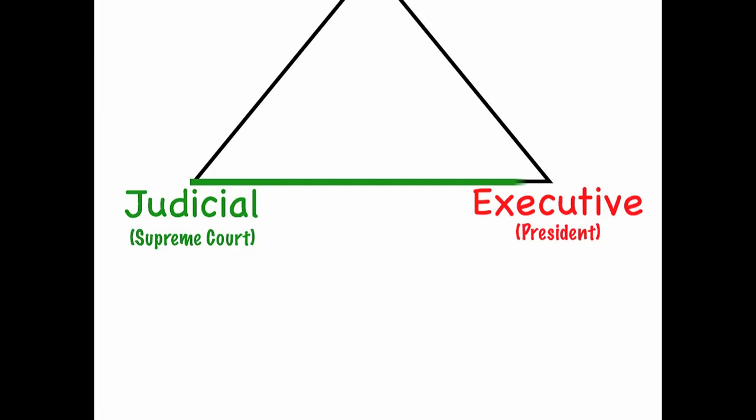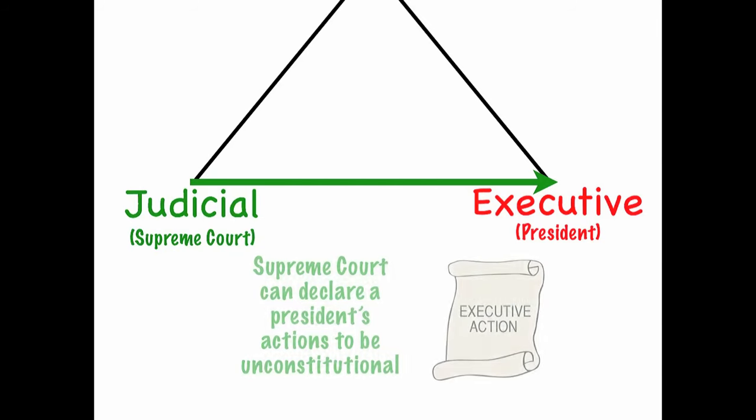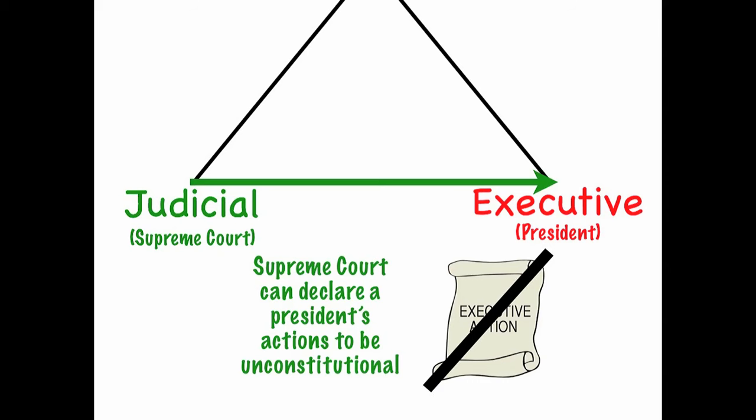The Supreme Court has power over the President because the Supreme Court can declare a President's actions to be unconstitutional. When the President does something that violates the Constitution, the Supreme Court has the power to stop him or her.